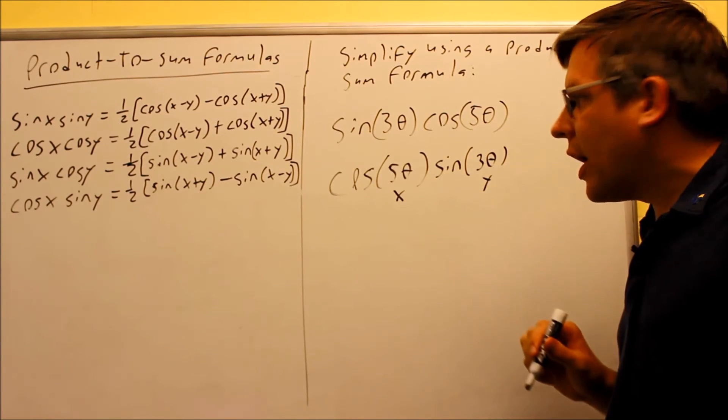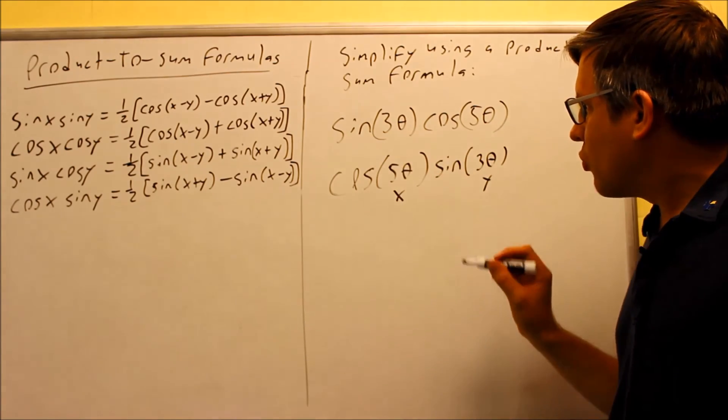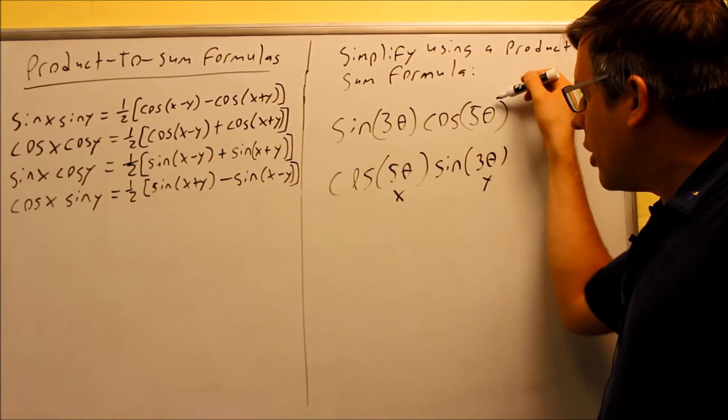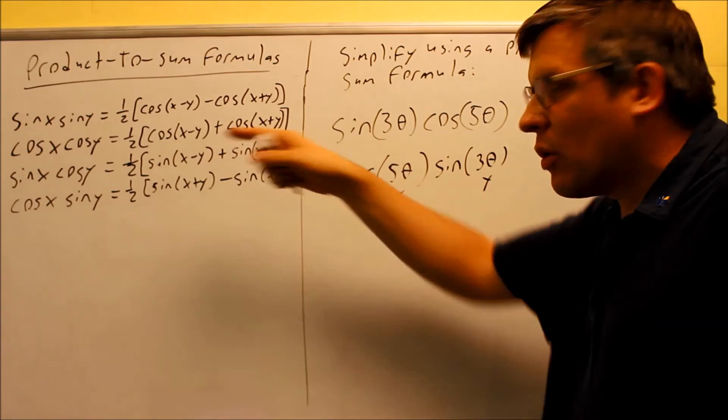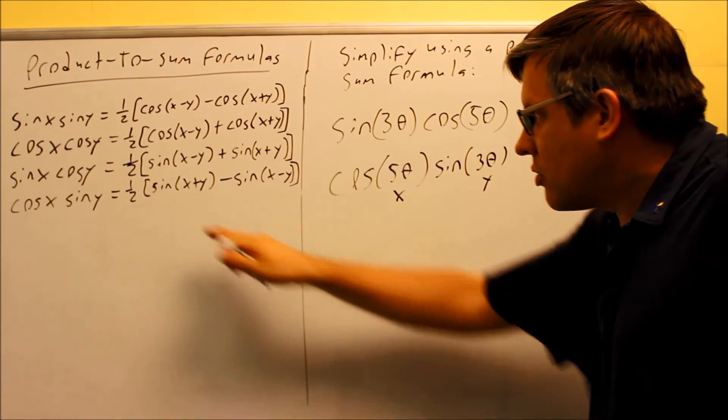So, the x is 5 theta and your y is going to be 3 theta. We're going to put that into the bottom formula now since we switched this. So again, I'm not going to use the top one and use this formula because I would have a negative angle using this to avoid the negative angle. So, using that bottom one, I have 1 half.